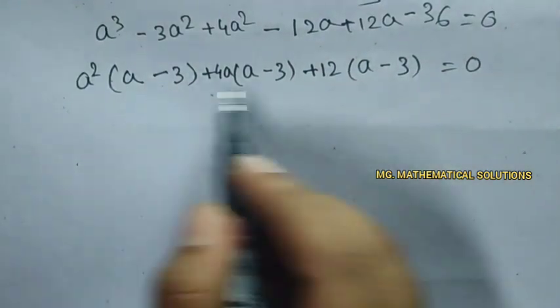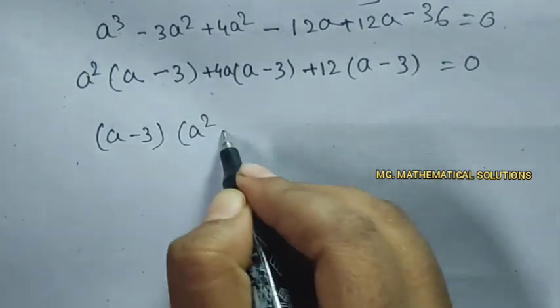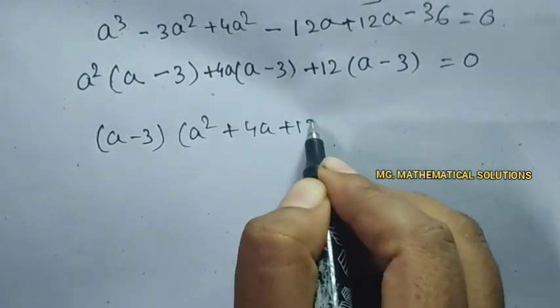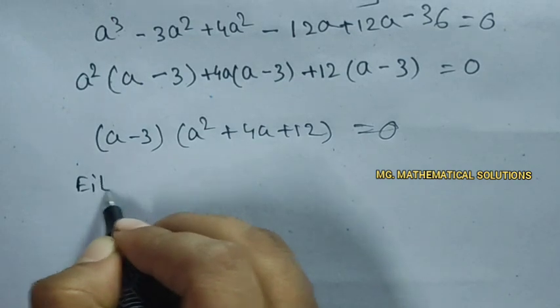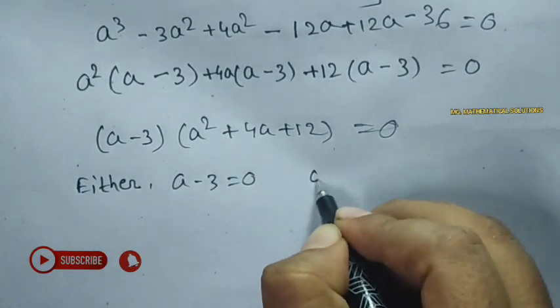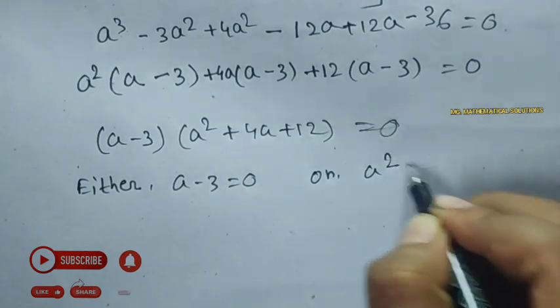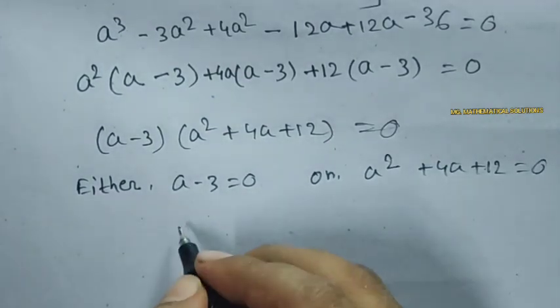Now we take common a minus 3 so a square plus 4a plus 12 equal to 0. So either a minus 3 equal to 0 or a square plus 4a plus 12 equal to 0. So a equal to 3.